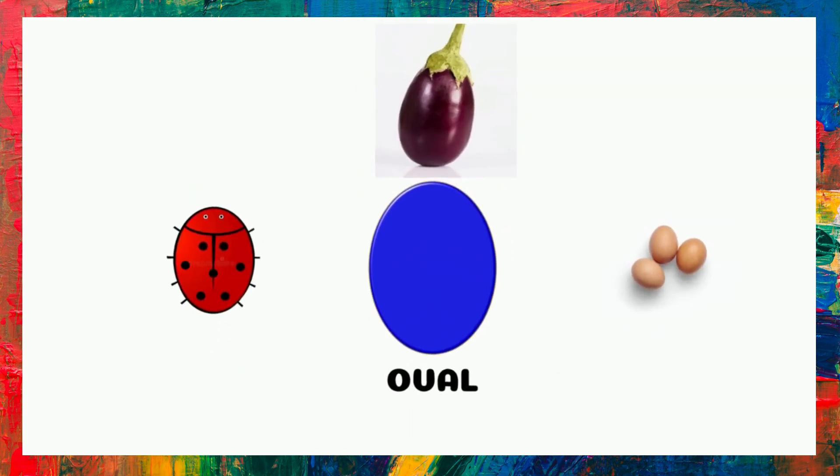What is the name of this shape? Oval. It's an oval. Examples of oval are ladybug, Pringles, egg.